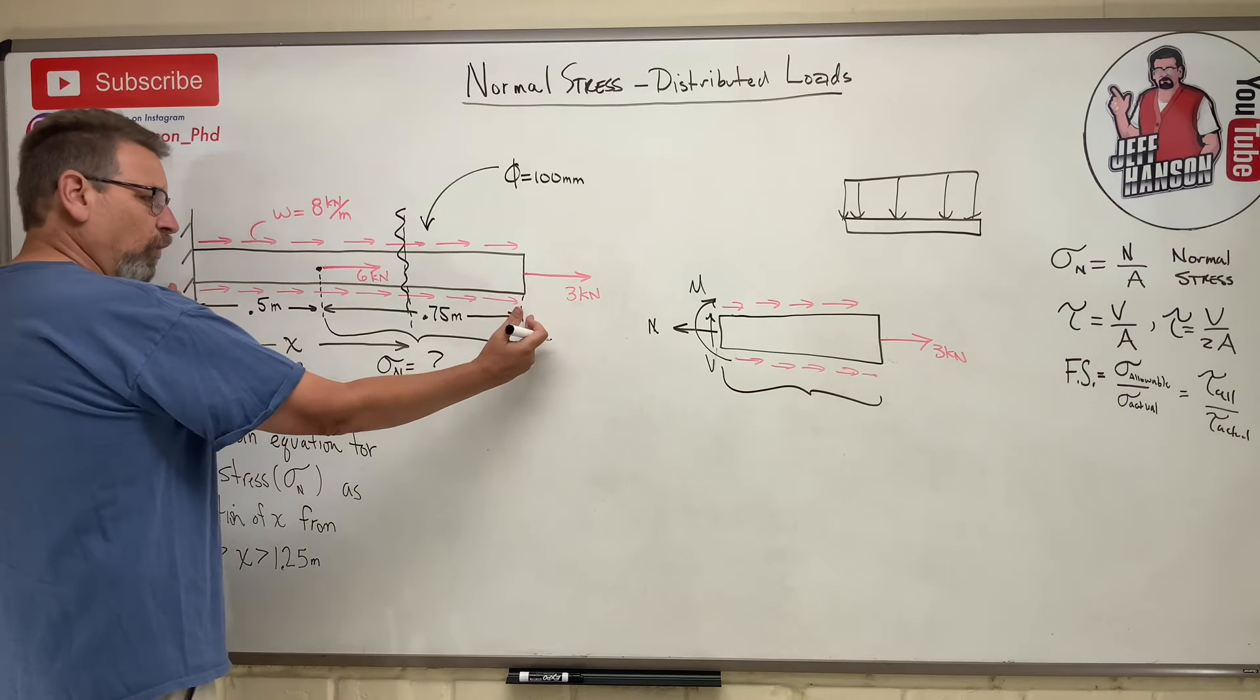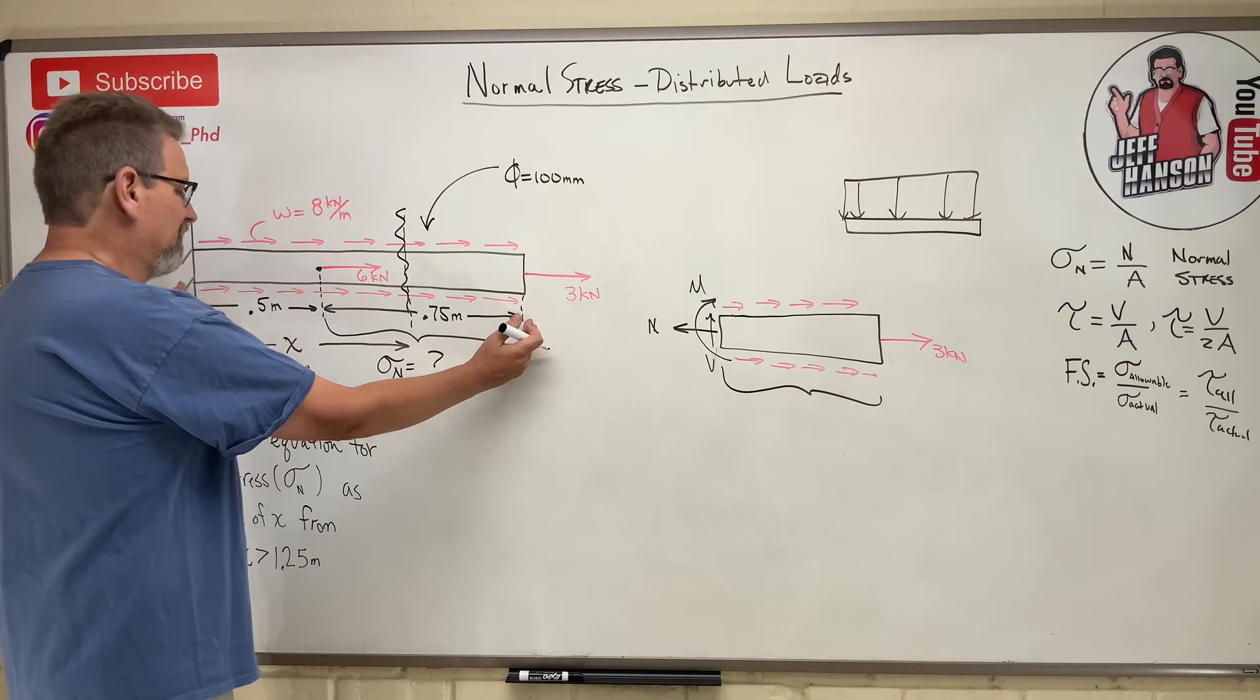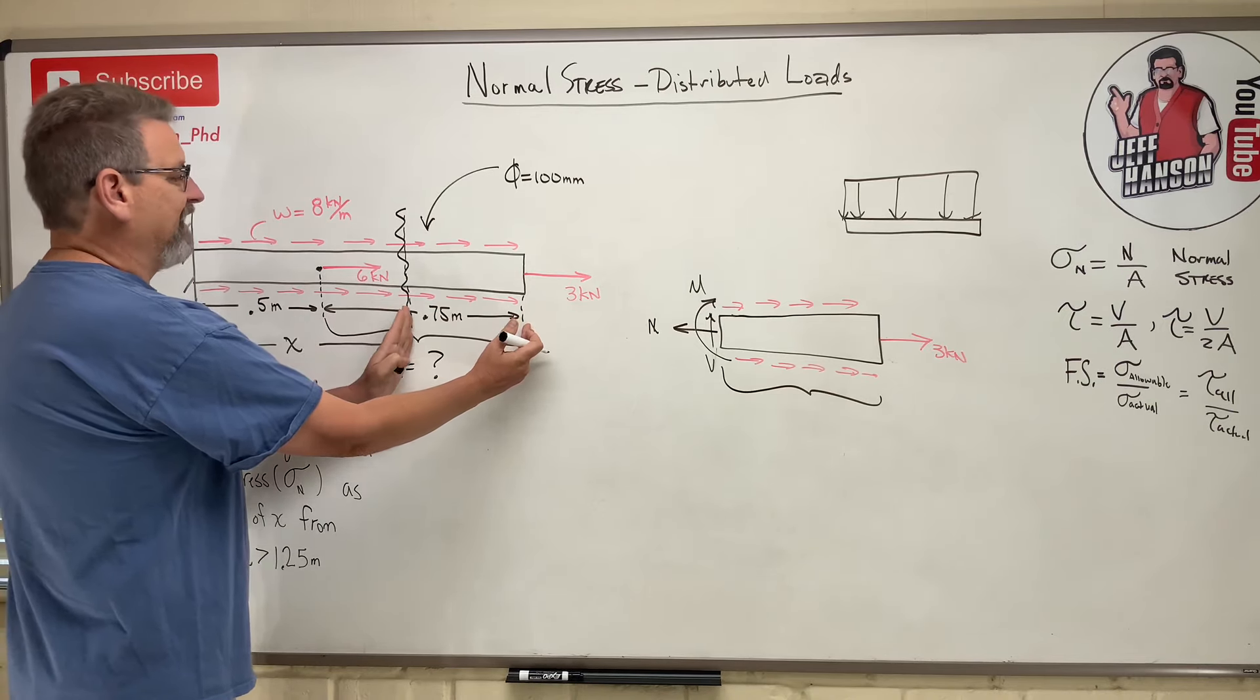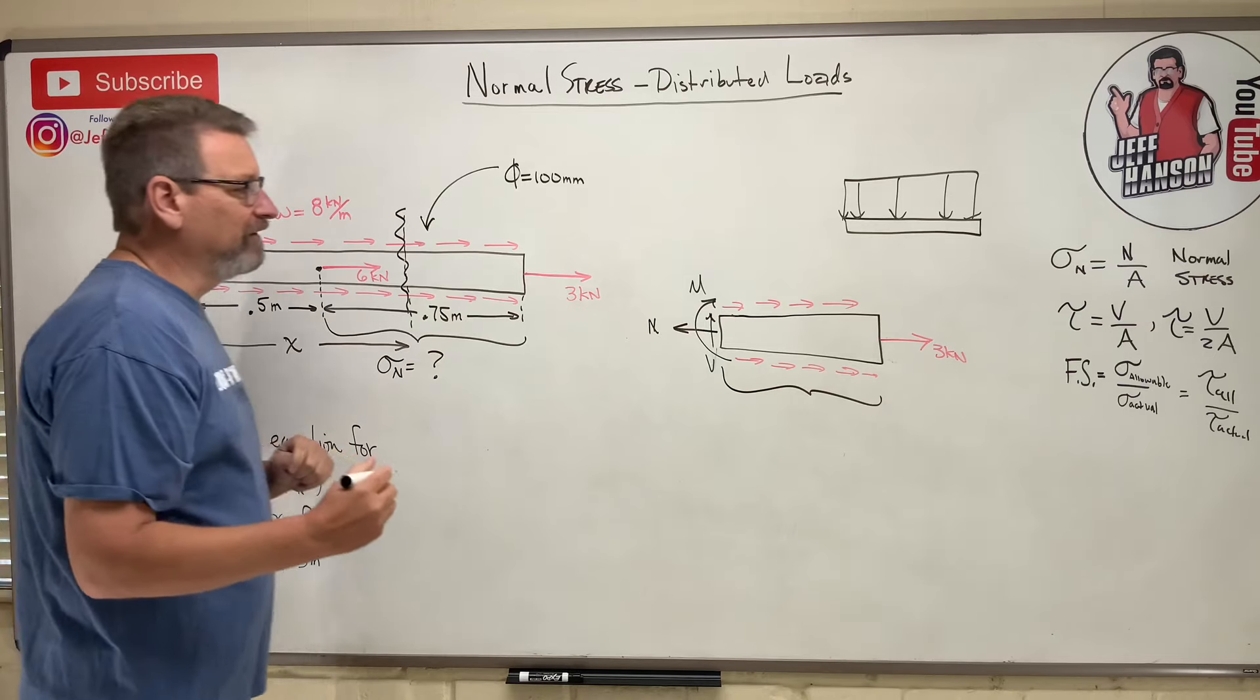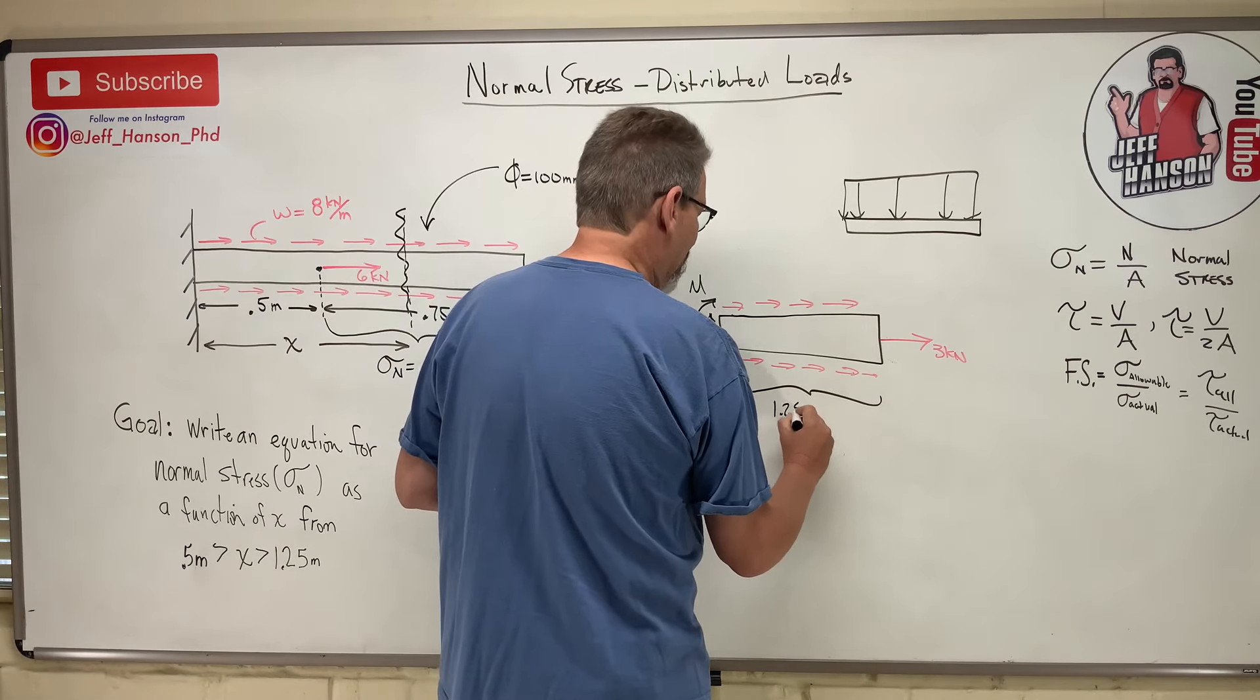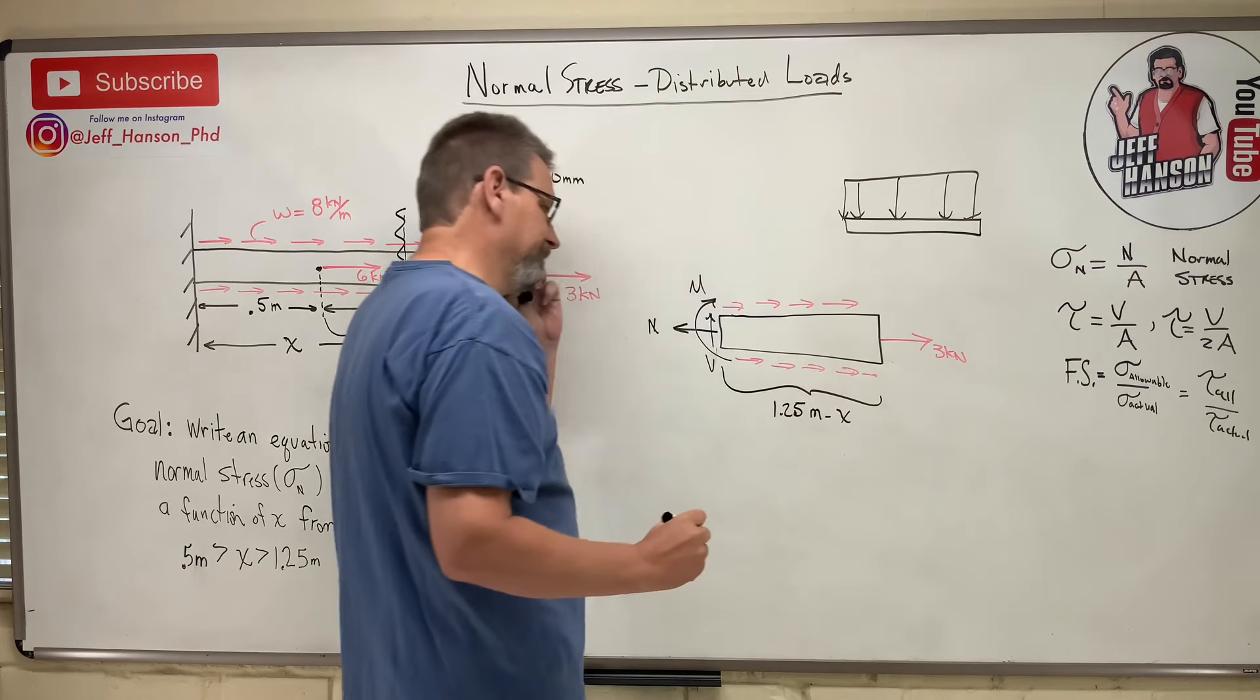x is from the start to there. Well, the whole beam is 1.25, 1.25 meters. So how far is just that distance there? The whole thing minus x, right? So this length here is 1.25 meters minus x.